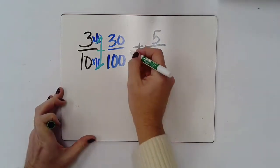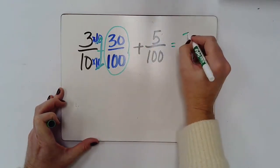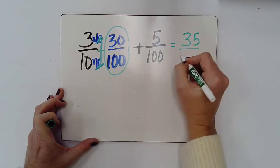So now my new fraction that I'm adding is thirty hundredths plus five hundredths is going to give me thirty-five hundredths. Let's try another problem here.